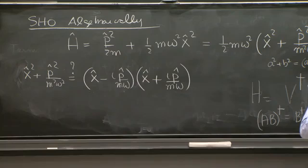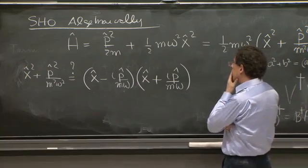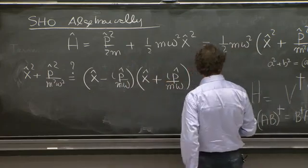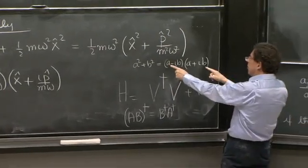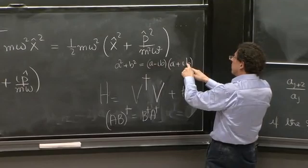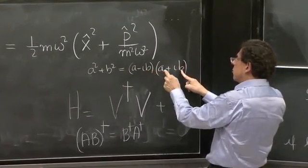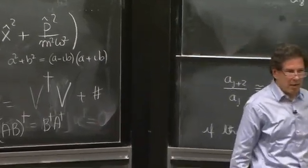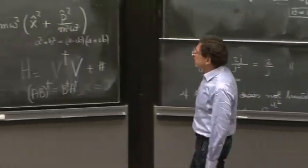Well, some things work. The only danger here is that these are operators and they don't commute. And when we do this, in one case, in the cross terms, the a is to the left of b. But in the other problem, the b is to the left of a. So we may run into some trouble. This may not be exactly true.